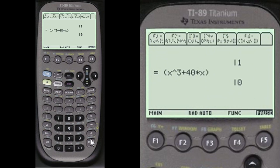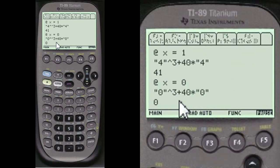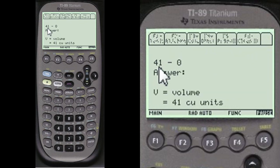So here's that integral. 1, 0, x equals 1, this equals that. 41, x equals 0, this equals 0. And upper minus the lower answer is volume equals 41 cubic units.